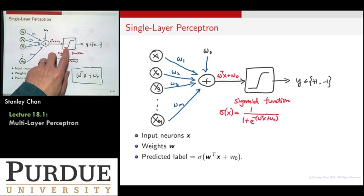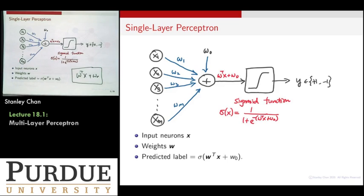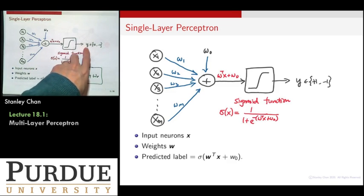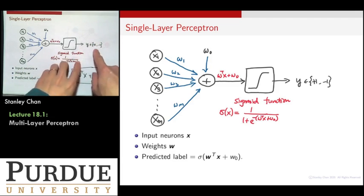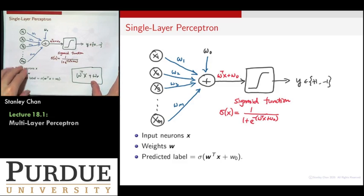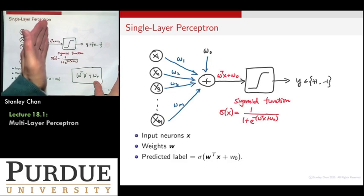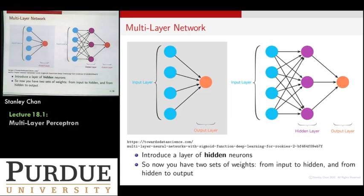Then you pass it through a sigmoid function, or in general just a nonlinear activation function — that could be a sigmoid, a step function, a linear response, or anything. Here we assume it is a sigmoid function because it is differentiable and has all the nice properties we learned in logistic regression. The output gives you something; imagine the slope is sharp enough that you only get plus one or minus one. You compare this with your ground truth label — if they match you're happy, if they don't you're not happy. Then you feedback through an optimization module, you update all these weights until most, if not all, training labels are correct. This is the single layer perceptron.